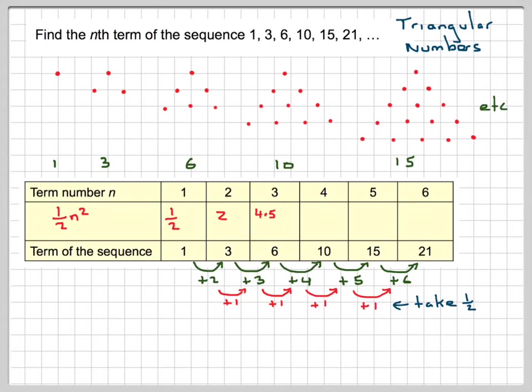4 squared is 16, 16 divided by 2 is 8. 5 squared is 25, 25 divided by 2 is 12.5. 6 squared is 36, divided by 2 is 18.